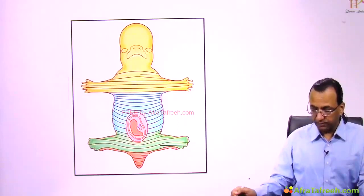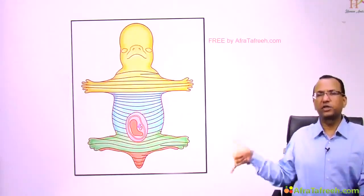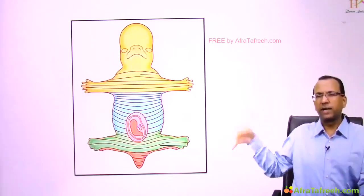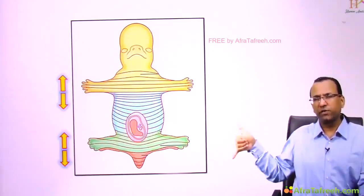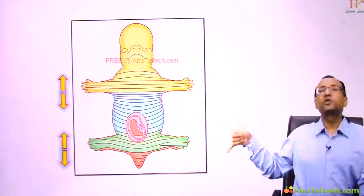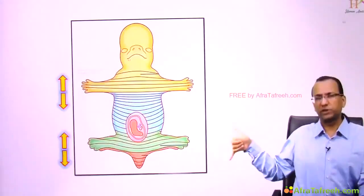In the upper limb, the thumb is proximal so it has a proximal dermatome, and the little finger is distal so it has a distal dermatome. The same story applies to the lower limb: the great toe has a proximal dermatome and the little toe has a distal dermatome.